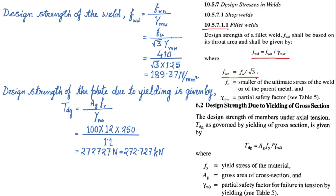So this formula fwd equals fw divided by gamma mw is used to calculate the design strength of the weld. Again, fw is replaced by fu divided by root 3. So this is the final formula. And if I put the corresponding values of fu and gamma mw, then finally I get the value of 189.37 Newton per mm square. So this is the design strength of the weld.